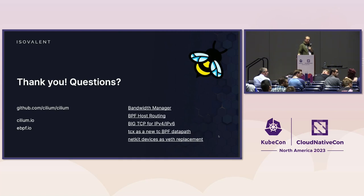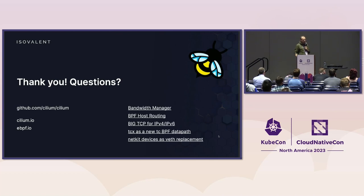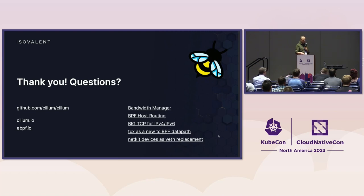Question: The standard use case is to have Kubernetes in a VM, in a public cloud. Does all of this work there as well? Answer: Yes, it does. Even the XDP-based load balancing — a lot of public cloud providers offer SR-IOV-based networking, so you get for example Mellanox or Intel NICs where you can attach XDP natively. No problem. And all the improvements — the veth device replacement, bandwidth manager, BigTCP — they all work on the public cloud as well.